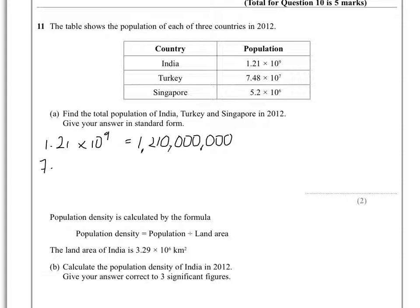Then we've got Turkey which is 7.48 times 10 to the 7. So the decimal moves 7 places to the right, giving us 74,800,000.